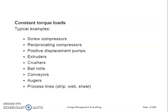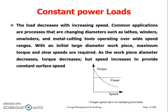Next we will discuss constant power loads. Here the load torque decreases with increasing speed, while power remains constant — torque is inversely proportional to speed. Examples include lathes, winders, unwinders, and metal cutting tools.